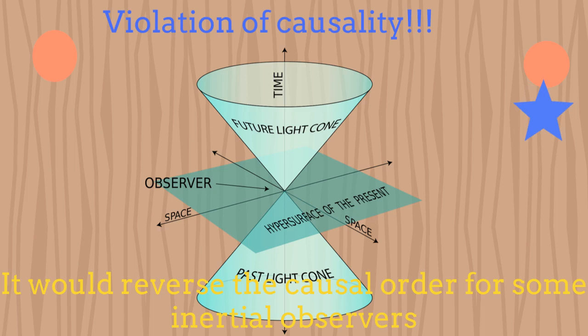For some observers, for example, the satellite would go out before the door opens, which is nonsense. It is precisely for this reason that the limit imposed by the speed of light is a very important issue in physics.